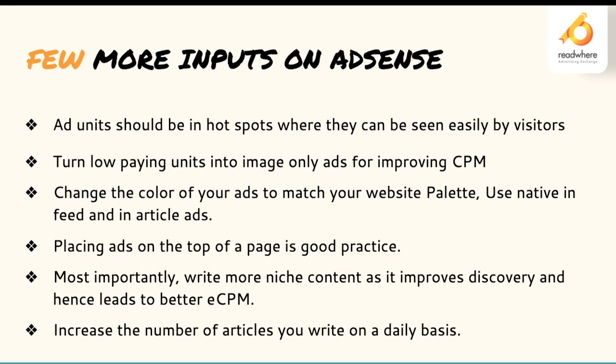You can drill down a report on ad units and see which are performing lower compared to higher ones. In those lower-performing ad units, you can improve CPM by turning off the text-plus-display option and switching to display only. Also, change the color of your ads to match your website palette — for in-feed or in-article native ad units, choose a background color matching your website to make it look like a native experience.